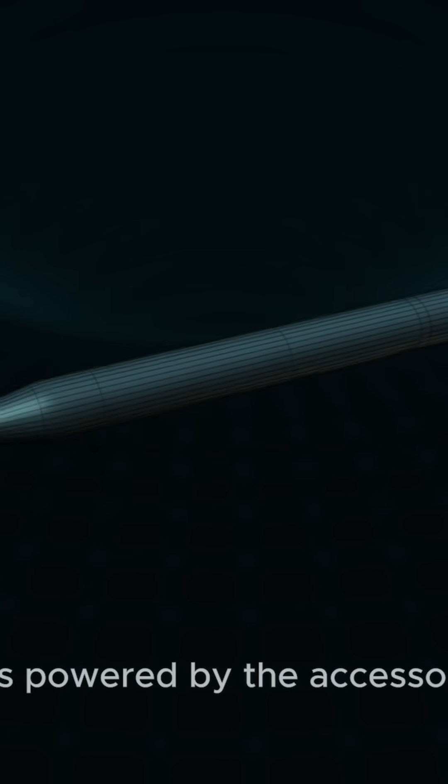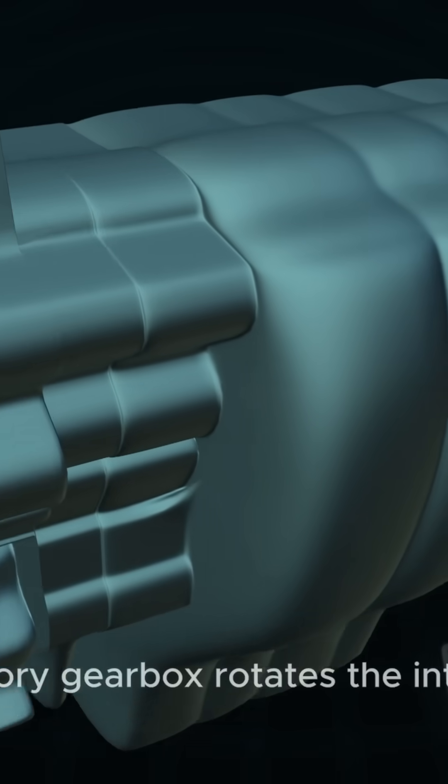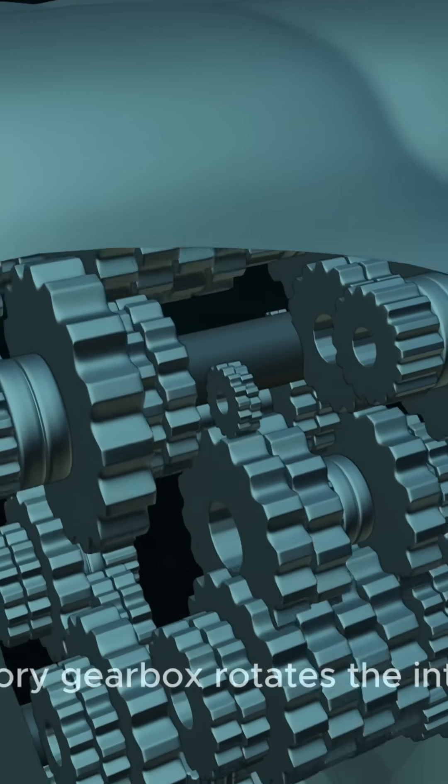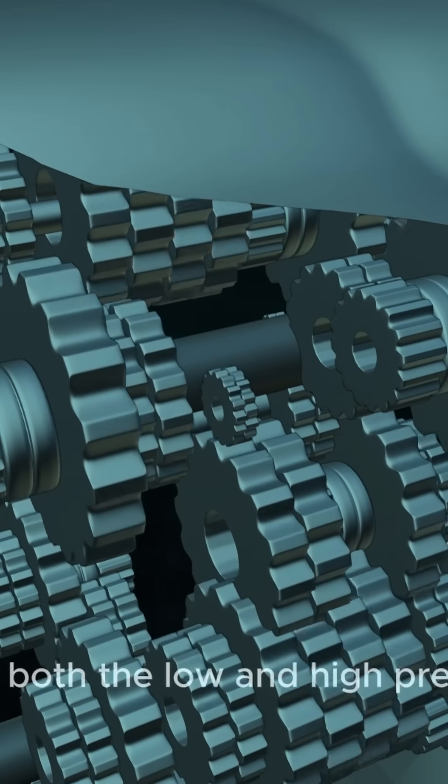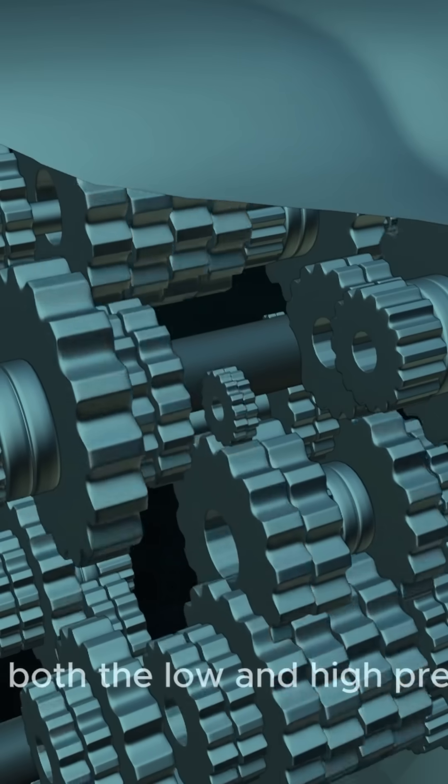Starting from the shaft drive, the pump is powered by the accessory gearbox. The accessory gearbox rotates the internal shaft which turns both the low and high pressure stage.